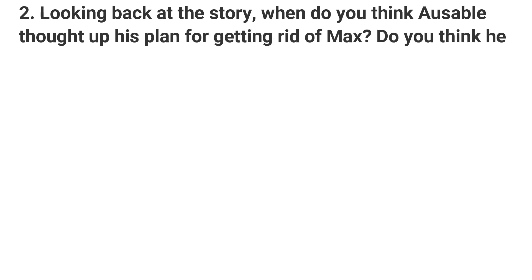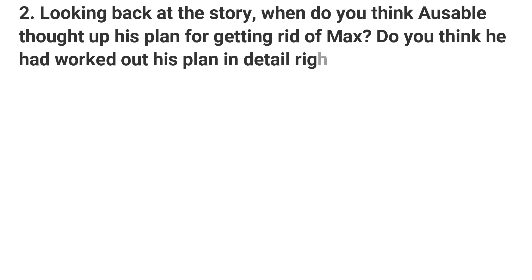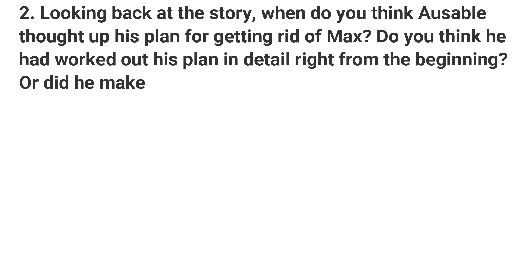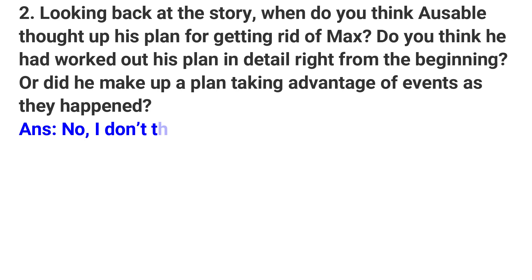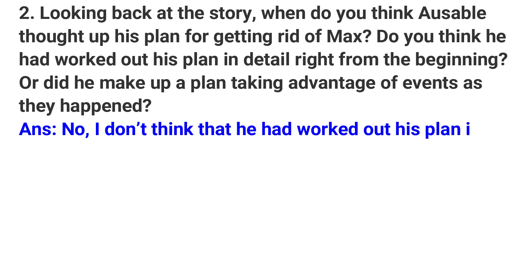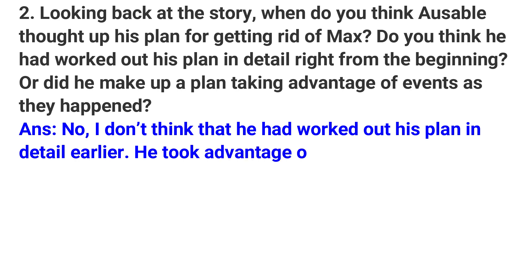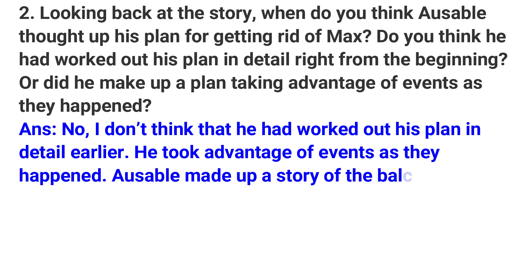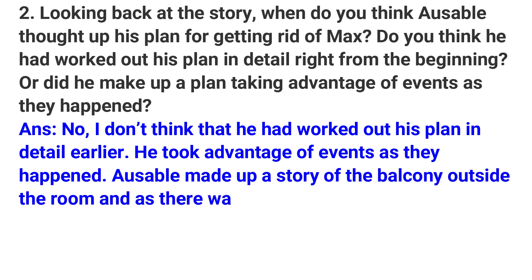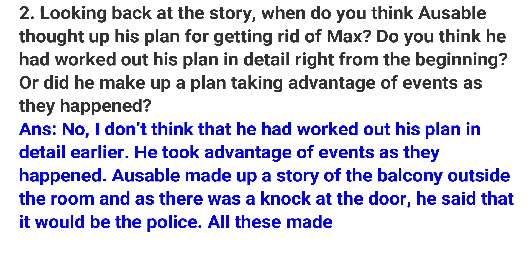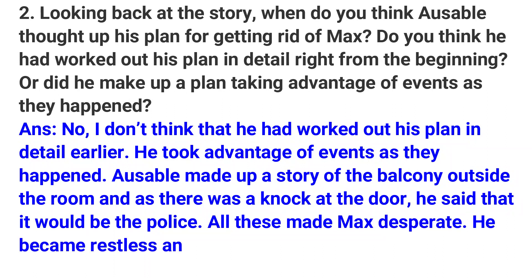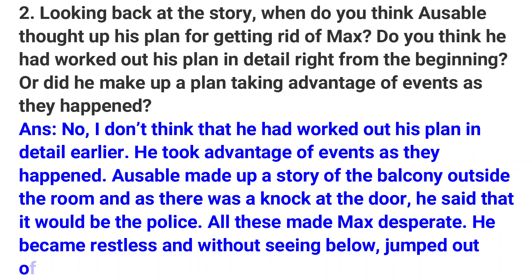Question: When do you think Ausable thought up his plan for getting rid of Max? Did he work out his plan in detail from the beginning or did he make up a plan taking advantage of events as they happened? Answer: No, I don't think he had worked out his plan in detail earlier. He took advantage of events as they happened. Ausable made up a story of a balcony outside the room, and as there was a knock at the door, he said it would be the police. All these made Max desperate; he became restless and without looking below, jumped out of the window.